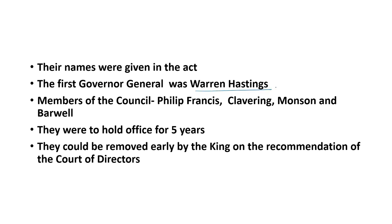Warren Hastings was the first Governor-General — his name was mentioned in the Regulating Act itself. The members of the council were Philip Francis, Clavering, Monson, and Barwell. Their tenure was five years. They could be removed by the British Crown based on the recommendation submitted by the Court of Directors. Future appointments were to be made by the English East India Company.